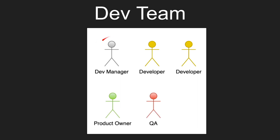Typically, you have a development manager who is helping you to direct resources and make sure that sprints are being completed. Developers are working on code and writing unit tests. QA is writing integration tests to ensure that everything works end-to-end. And your product owners are ensuring that you're developing the right thing based on research to figure out what the customers need.